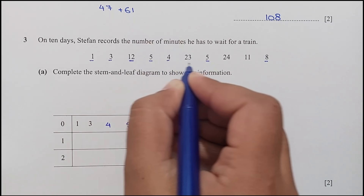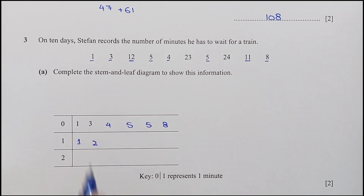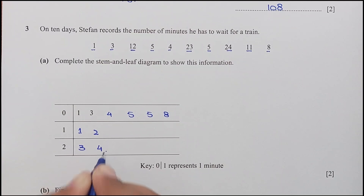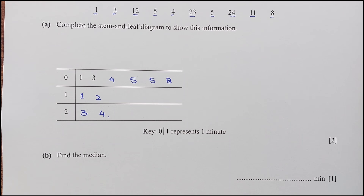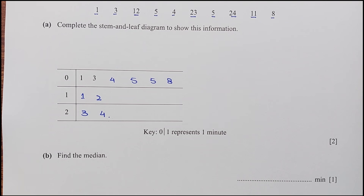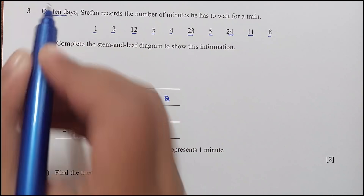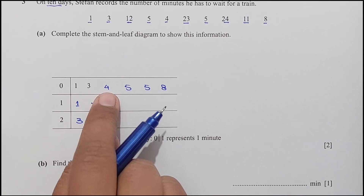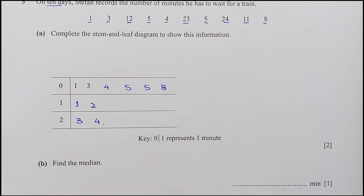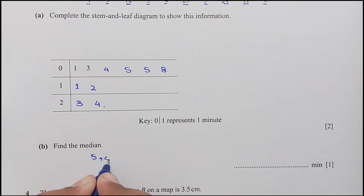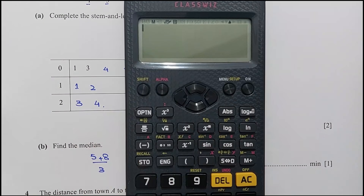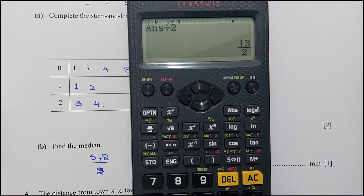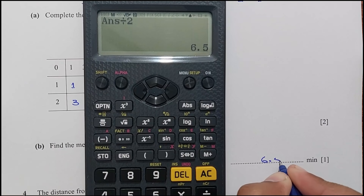With stem 1, it's 11 and 12. The next stem is 2, with leaves 3 and 4. For part B, find the median. Since there are 10 values, we need the average of the 2 middle values. Counting from each end, the middle values are 5 and 8. The average of 5 and 8 is 5 plus 8 divided by 2, which is 6.5 minutes.